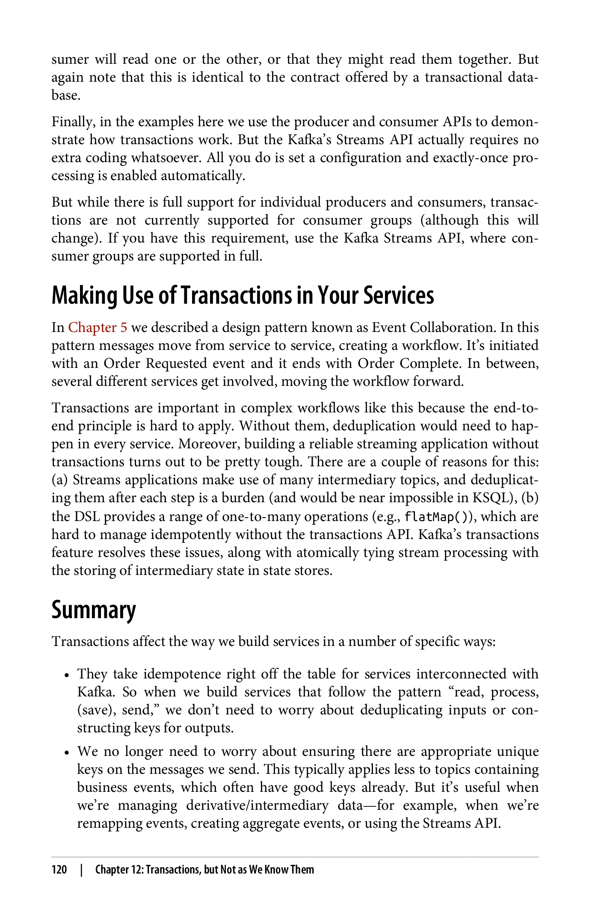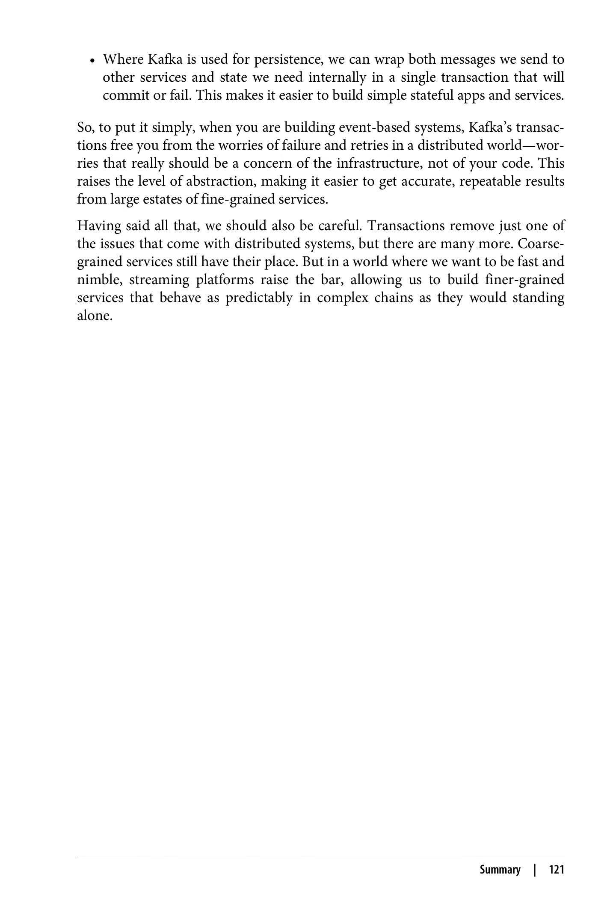Summary: transactions affect the way we build services in a number of specific ways. They take idempotence right off the table for services interconnected with Kafka. So when we build services that follow the pattern read, process, save, send — we don't need to worry about deduplicating inputs or constructing keys for outputs. We no longer need to worry about ensuring there are appropriate unique keys on the messages we send. This typically applies less to topics containing business events, which often have good keys already, but it's useful when we're managing derivative or intermediary data — for example, when remapping events, creating aggregate events, or using the Streams API. Where Kafka is used for persistence, we can wrap both messages we send to other services and state we need internally in a single transaction that will commit or fail.